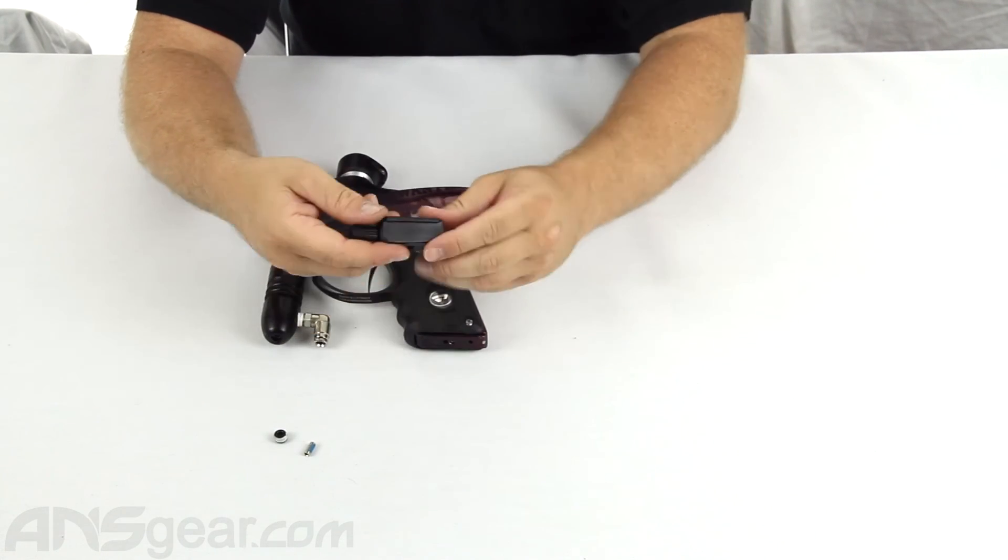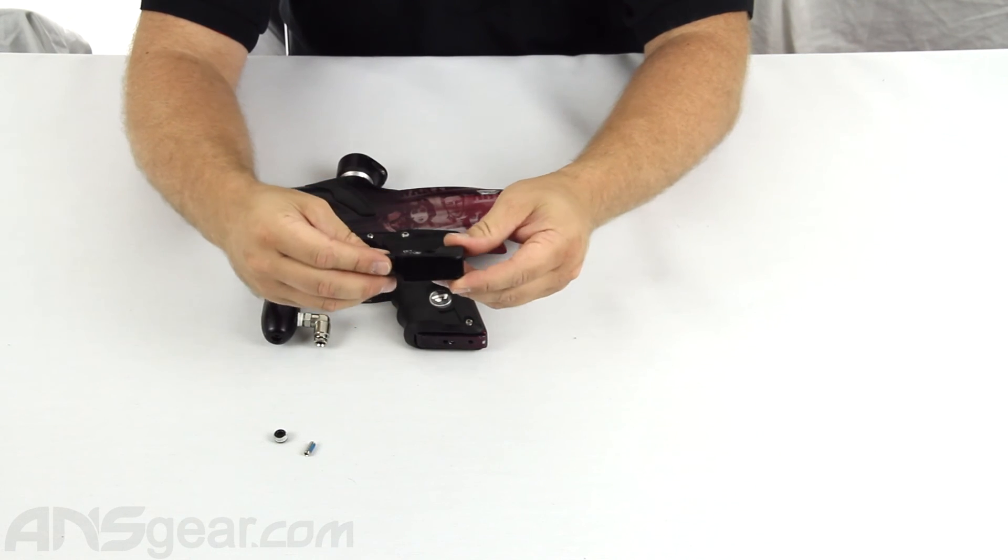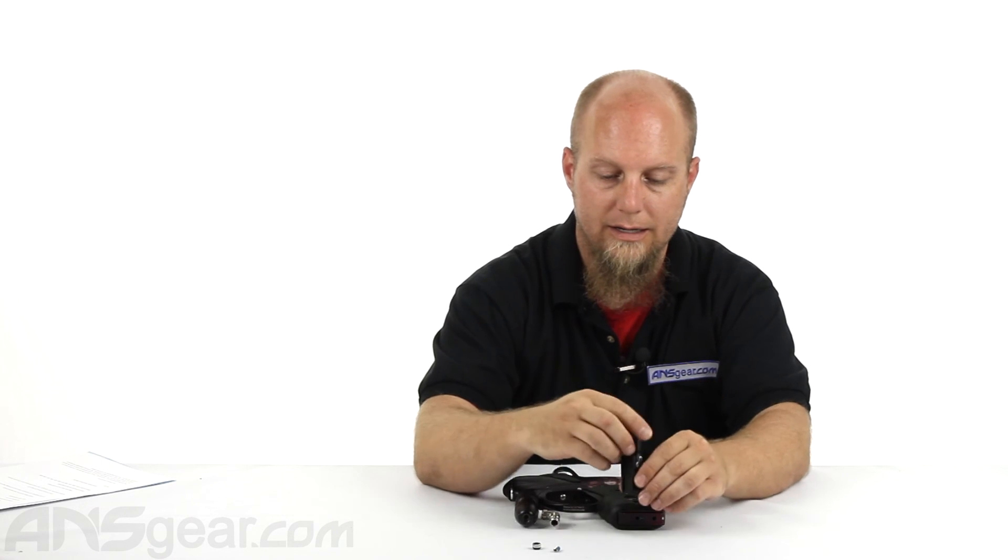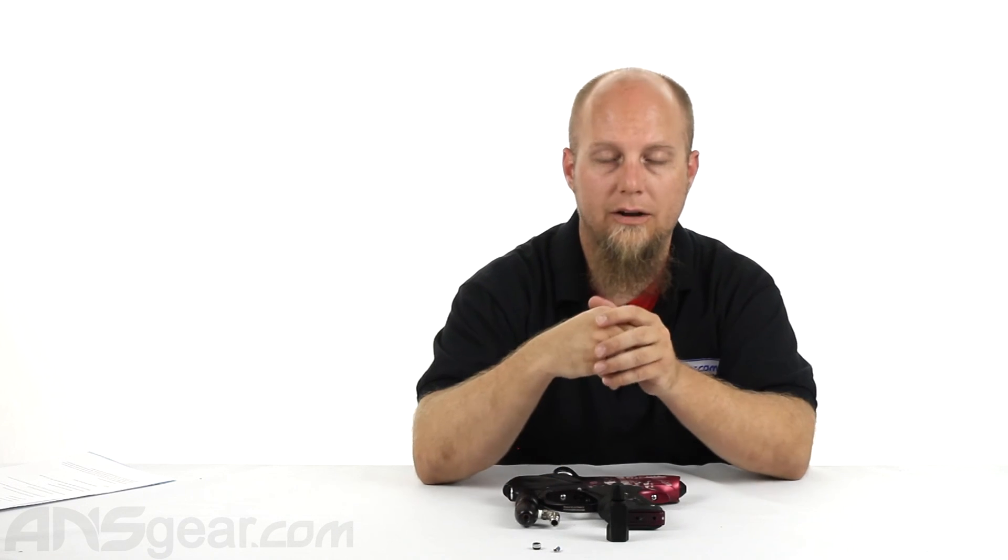So if you're looking for a replacement on-off, it's very streamlined, very small. Check out the one from Zodan. It is their on-off ASA. Check it out on the website. Order yours now at ansgear.com.